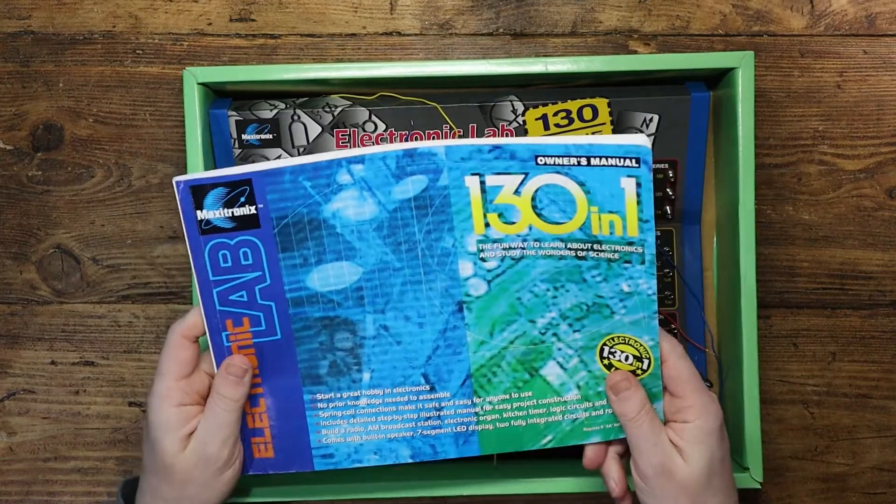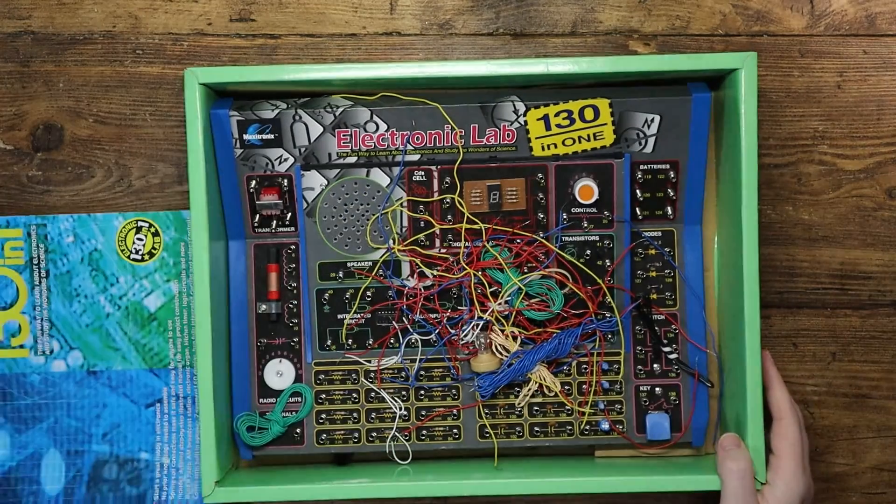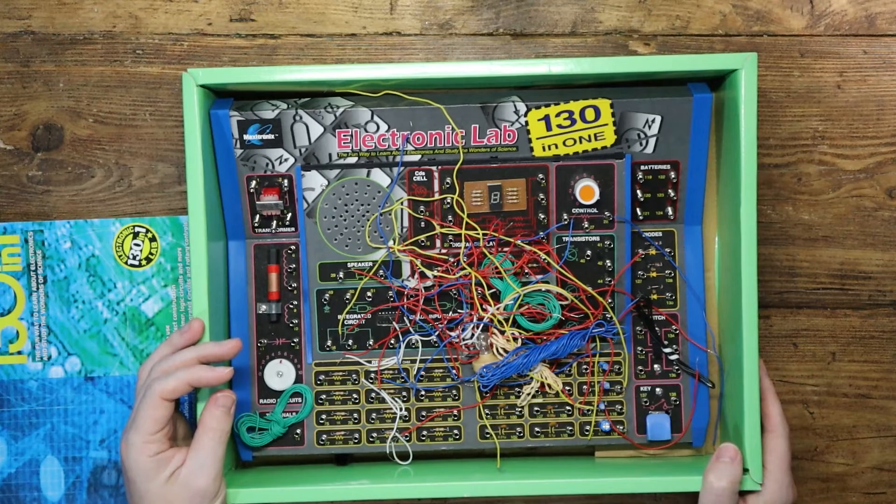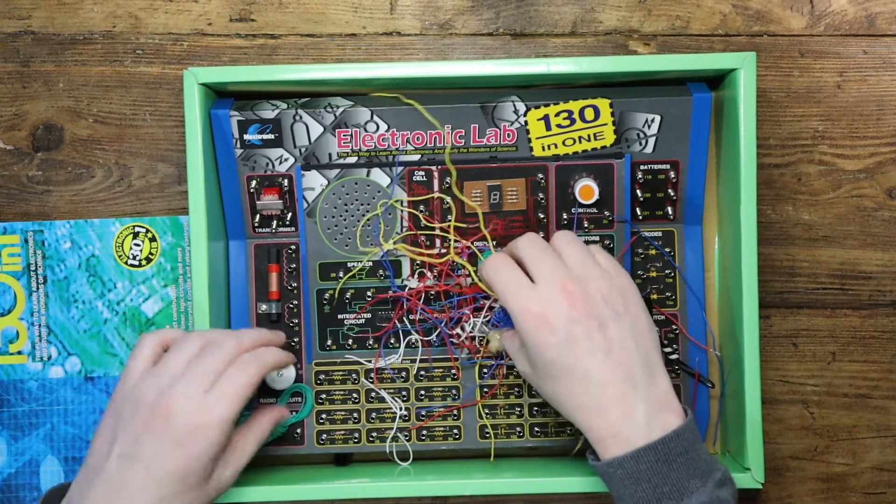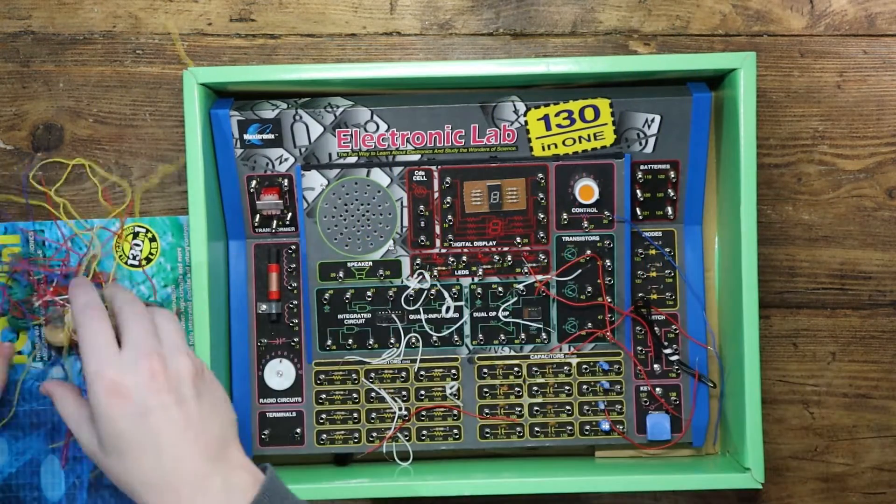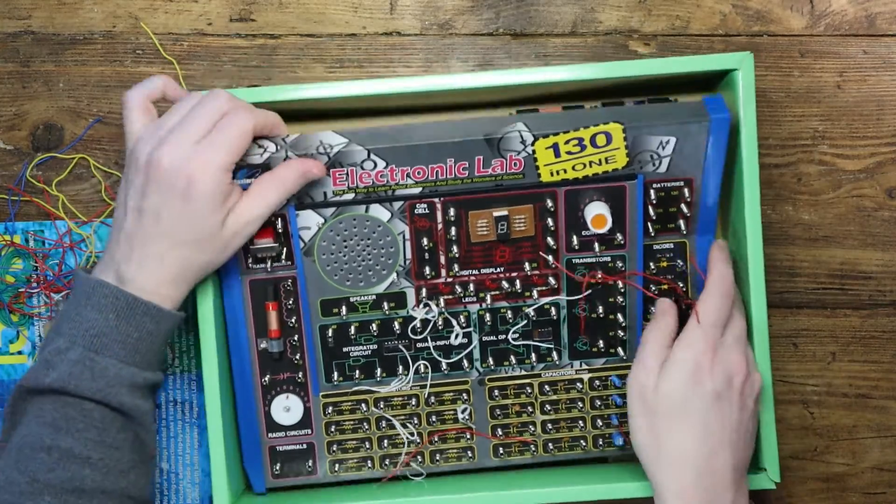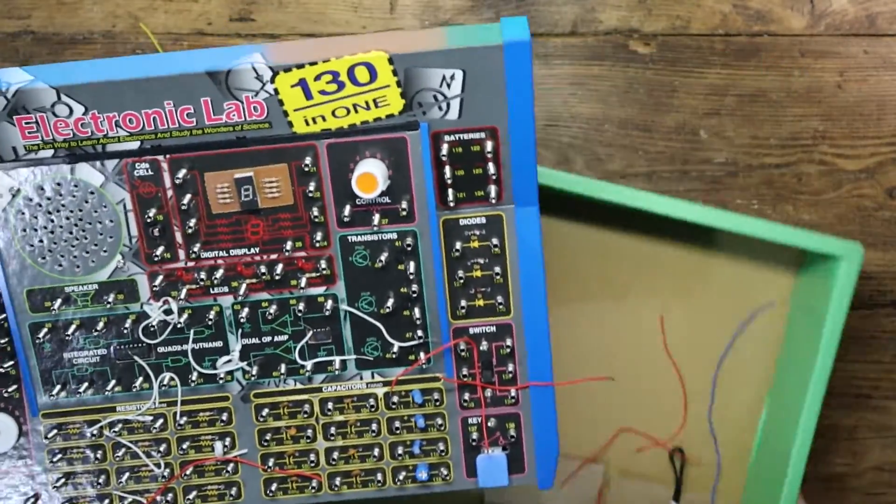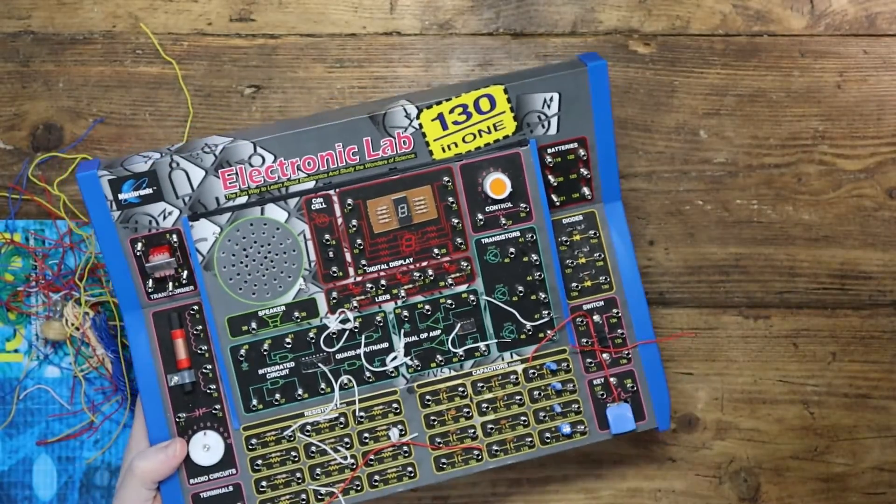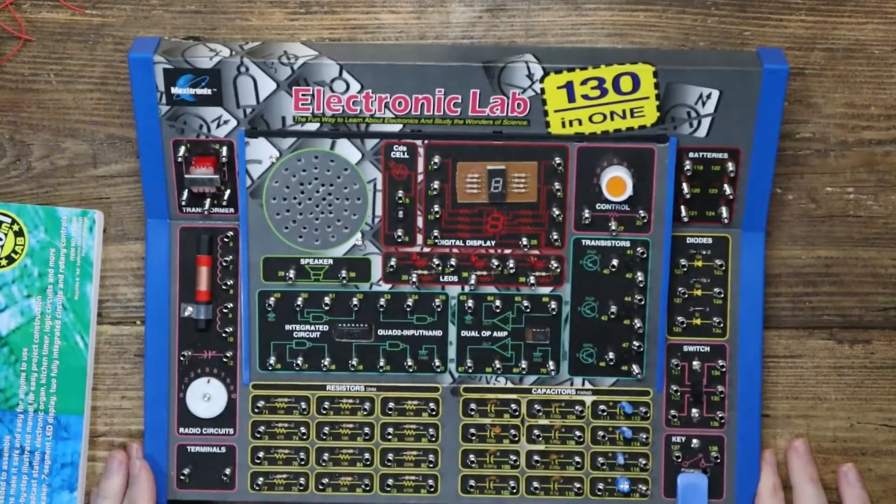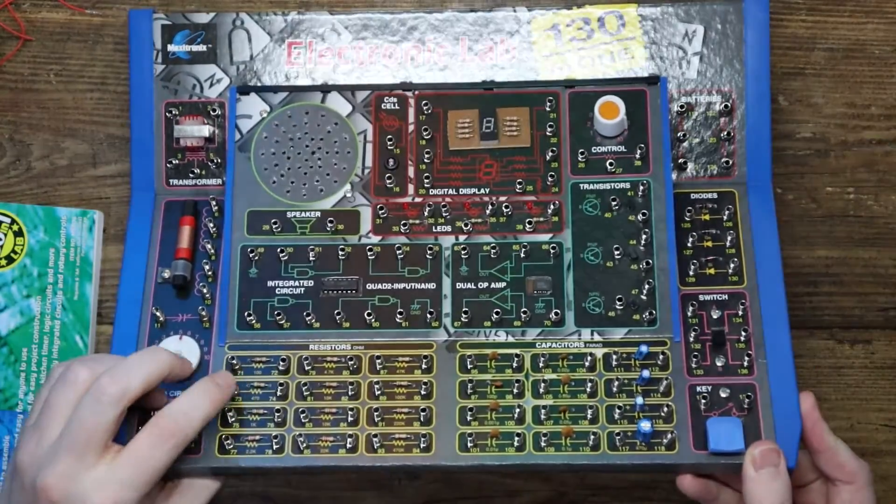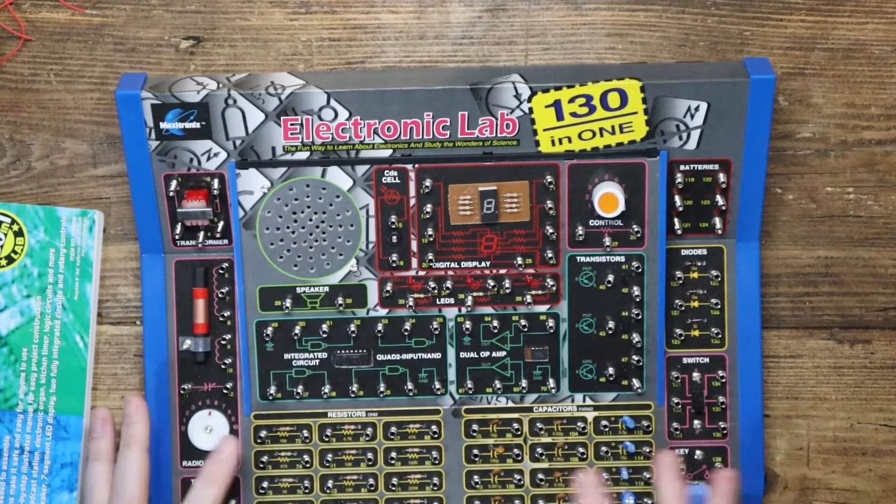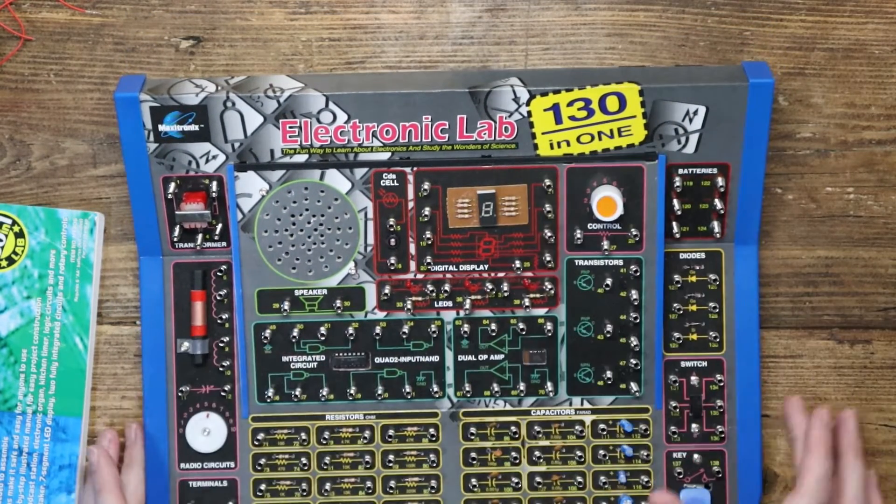So we've got a chunky manual, we'll have a look at that in just a moment. Inside here, this probably was packaged a little better when it was first sold. This is the electronics lab itself. Get the box out of the way there. Look at this thing, so it does indeed have these sort of springy connections between these different points all over this thing.